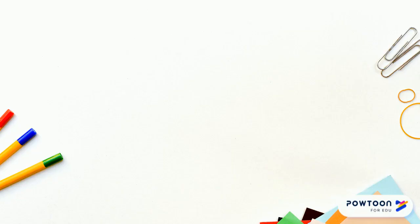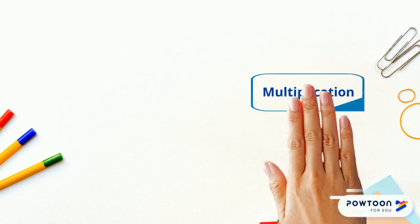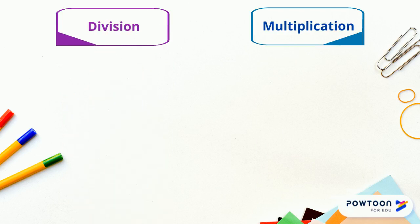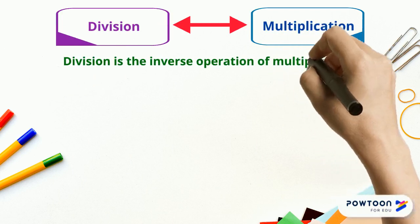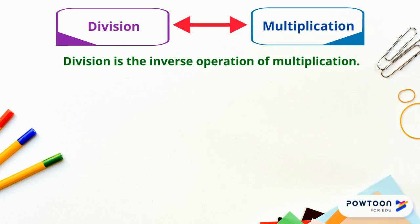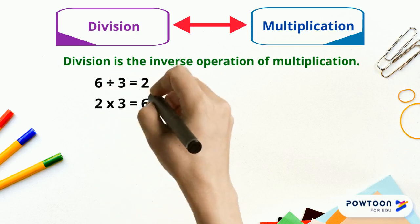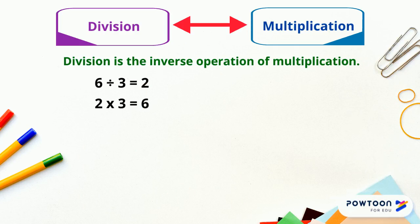Firstly, you need to understand that multiplication and division are closely related, given that division is the inverse operation of multiplication. If you divide six by three, the answer is two, because two times three is six. Summary from that is we start with six and end with two, and then we start with two and end with six.